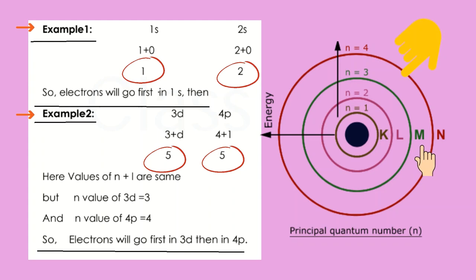Example 1. Compare 1s and 2s. For 1s, n plus l value, n equals 1, l value for s equals 0. Therefore 1 plus 0 equals 1. Value of n plus l for 1s is 1.